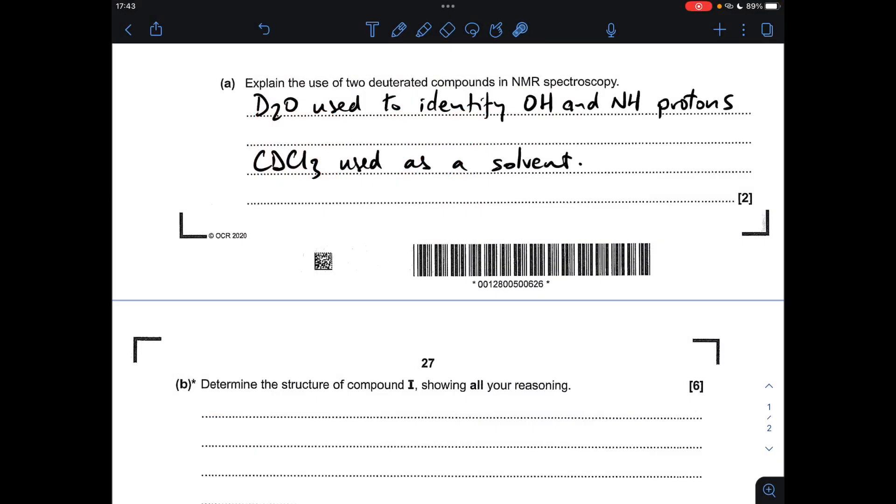Okay, so make a start. Part A, explain the use of two deuterated compounds in NMR spectroscopy. So D2O is used to identify OH and NH protons, and CDCl3 is used as a solvent.